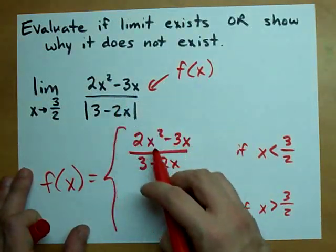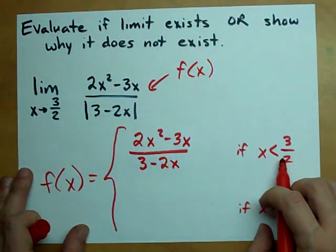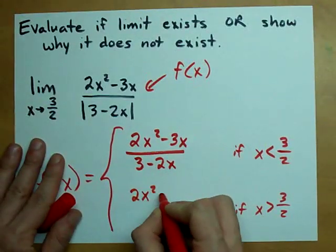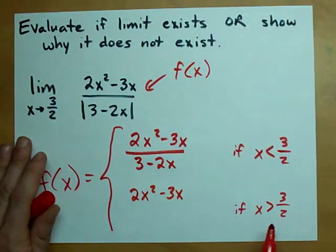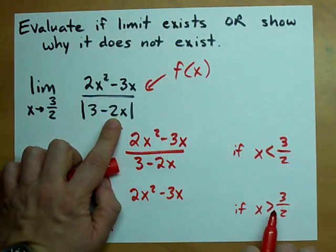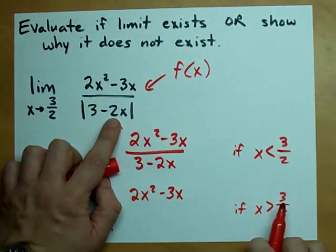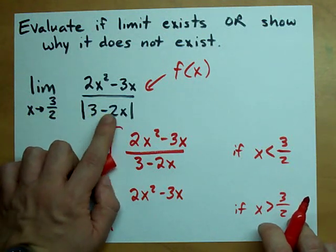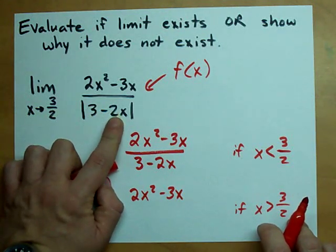This is the same as that when x is less than 3 halves. But when x is greater than 3 halves all of a sudden 2x is greater than 3. So what we get in here is 3 minus some number bigger than 3.